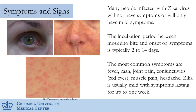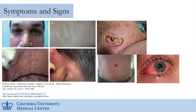Many people who have Zika virus have no symptoms at all or only very mild symptoms that improve on their own. The incubation period is typically about one to two weeks. The most common symptoms are nonspecific: fever, rash, joint pain, and inflammation of the eye. It usually lasts up to about a week. If you've been to an area or your partner has been to an area and you develop a rash and joint pain, you need to come to the hospital to be evaluated.